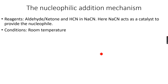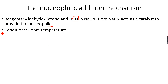Now we are going to look at the nucleophilic addition mechanism. This mechanism happens with both aldehydes and ketones. The specific type of nucleophilic addition we will cover is the addition of the nitrile group - the CN group - into a carbonyl compound. A nucleophile is an electron-rich species that wants to donate its electrons. Starting with a carbonyl compound - which can be an aldehyde or a ketone - the main feature is the carbonyl group.